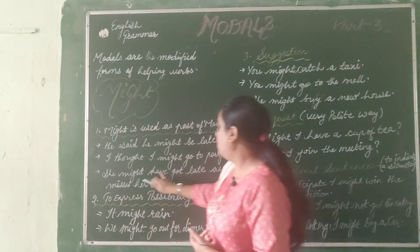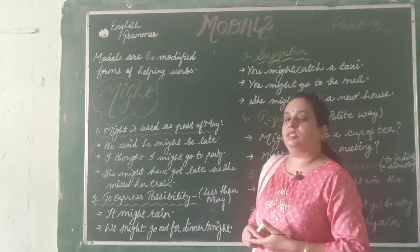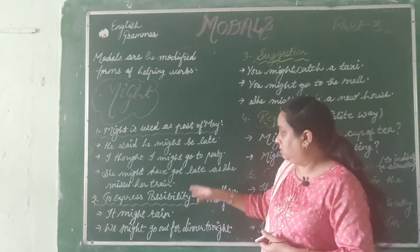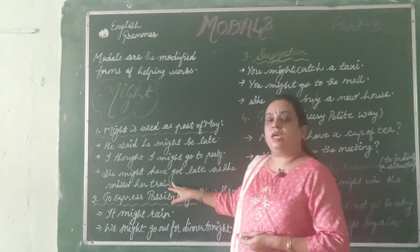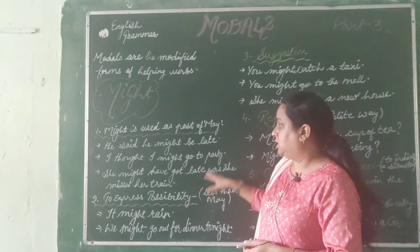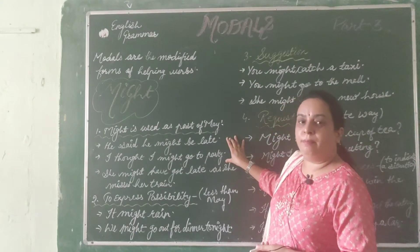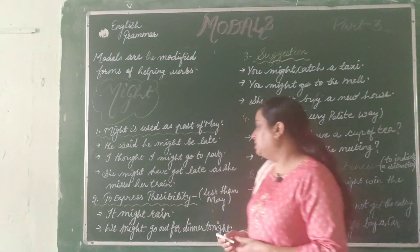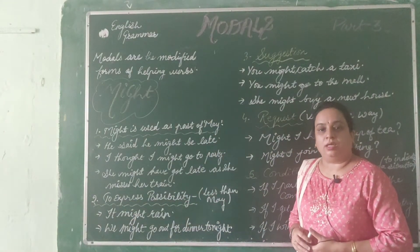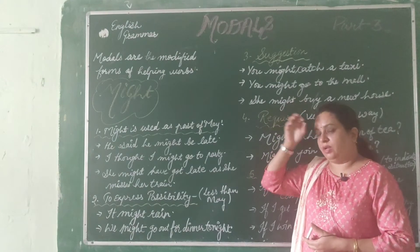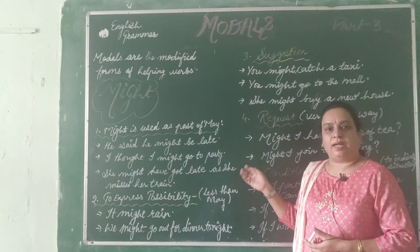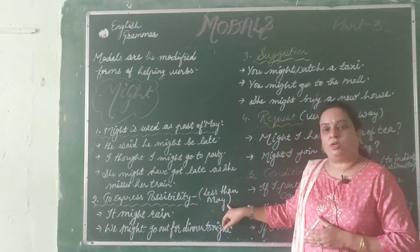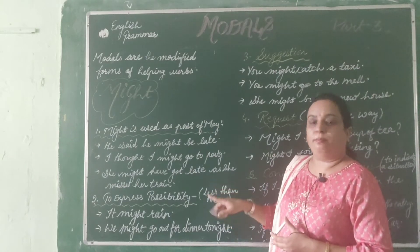'She might have got late as she missed the train' — she might have got late because she missed her train. This is also the past use of may. The second use of might is to express possibility that is weaker than may. When we said 'it may rain today,' that was strong possibility. But 'it might rain today' means there is only about 20-30% possibility.